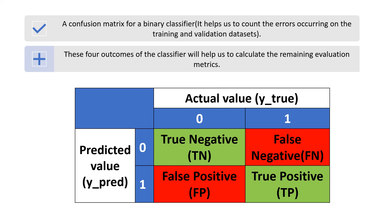To read the confusion matrix: if the predicted value is zero (negative) and the actual value is zero, we have a True Negative. If the predicted value is zero (negative) and the actual value is one, we have a False Negative. If we predict one (positive) and the actual value is zero, we have a False Positive. Finally, if the predicted value is one and the actual value is one, we have a True Positive. All classification metrics depend on these four outcomes.